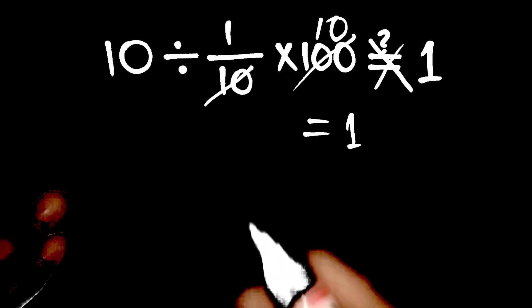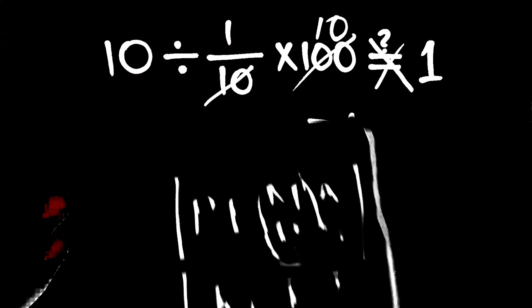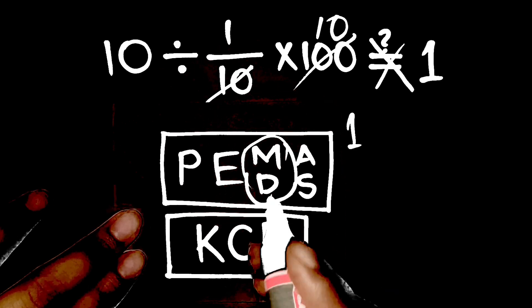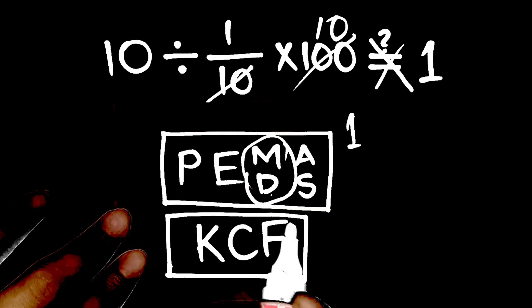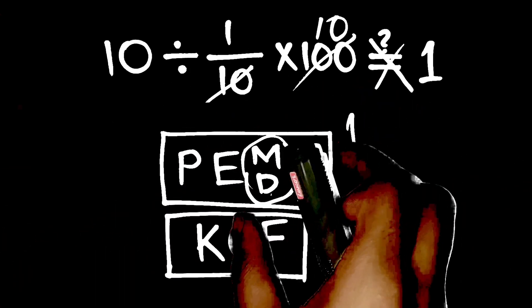Not quite. Here's the tricky part. This isn't just about multiplying fractions. Math follows the order of operations, PEMDAS, and also the concept of keep-change-flip for dividing by fractions. Multiplication and division are on the same level, so we go left to right. Let's do it step by step.